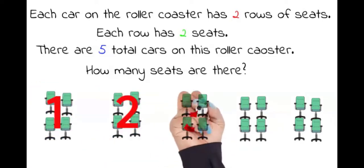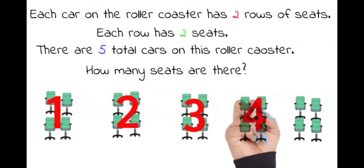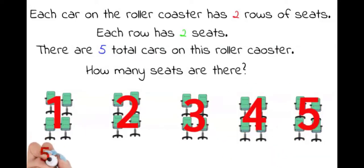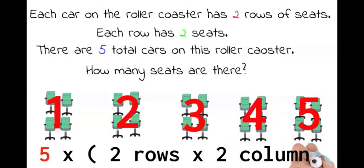So this is one car, two cars, three cars, four cars, and five cars. So my multiplication number sentence looks like this: five times two rows of two columns, or five times two rows times two columns.